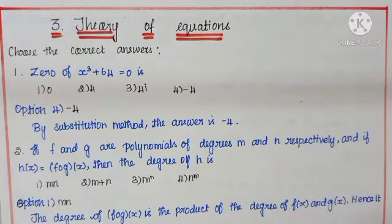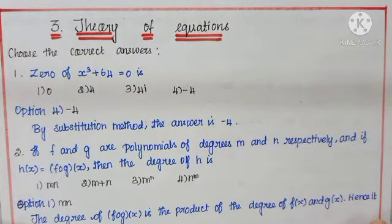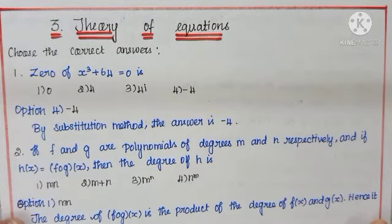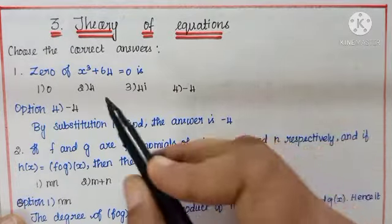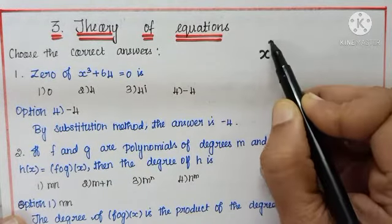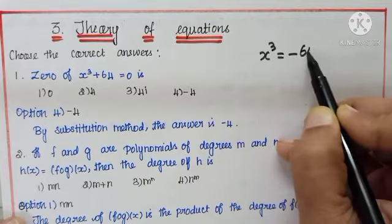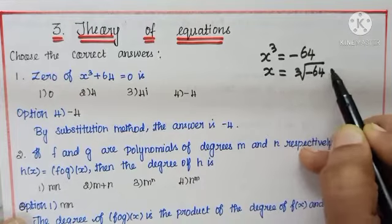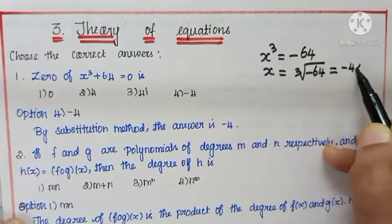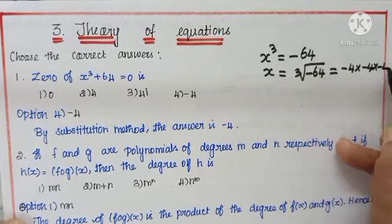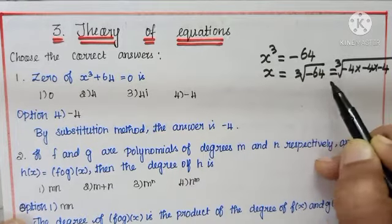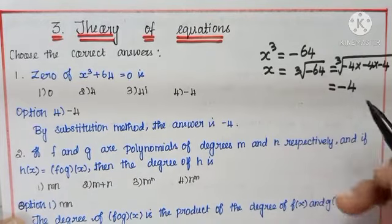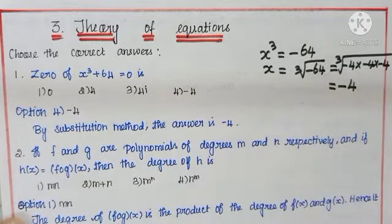Chapter 3 Theory of Equations, choose the correct answer. Question number 1: x³ + 64 = 0. We know x³ = -64, or x is the cube root of -64. Since (-4) × (-4) × (-4) = -64, the cube root is just -4, so option 4 is correct.